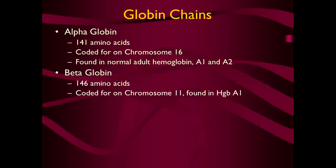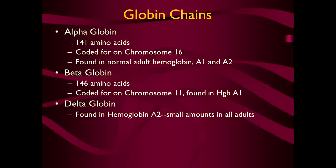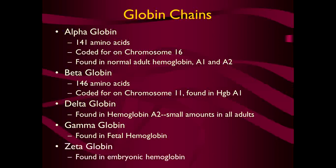Alpha-globin has 141 amino acids; coding is on chromosome 16 and it is found in normal adult hemoglobin A1 and A2. Beta-globin has 146 amino acids; coding is on chromosome 11 and it is found in hemoglobin A1. Delta-globin is found in hemoglobin A2 in very small amounts in adults. Gamma-globin is found in fetal hemoglobin, and zeta-globin is found in embryonic hemoglobin.